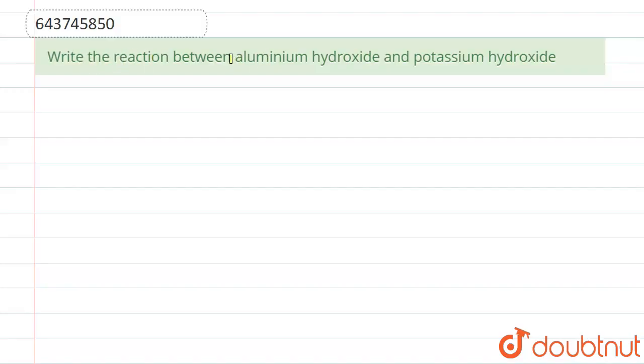Write the reaction between aluminum hydroxide and potassium hydroxide. So let us see the reaction.